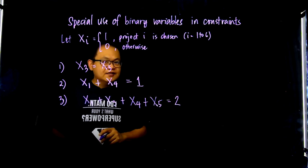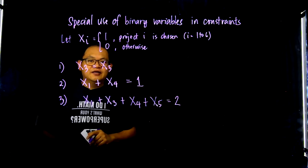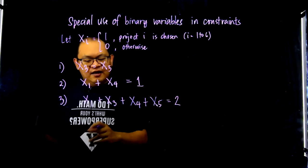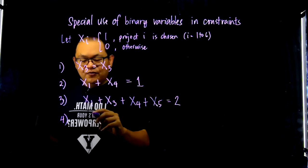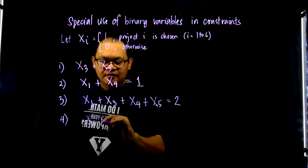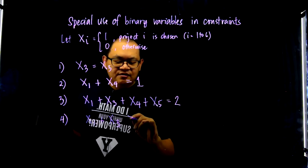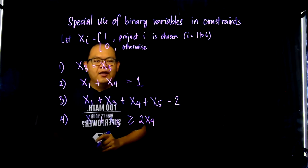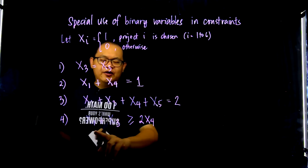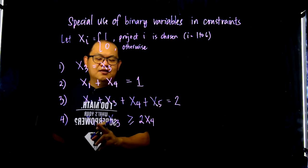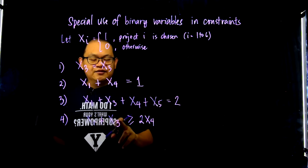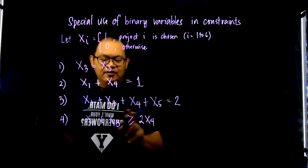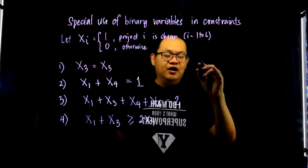For example number 4, let's say project 4 can only be chosen if project 1 and 3 are chosen. How do you come up with the constraint? The answer is: x1 plus x3 is greater than or equal to 2x4. To know if this constraint is correct, let me repeat the case: you can only choose x4 if you have chosen x1 and x3. To verify, let me show you two tables — a table of valid values and a table of invalid values.